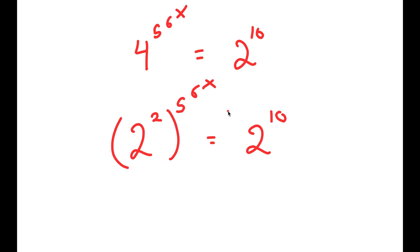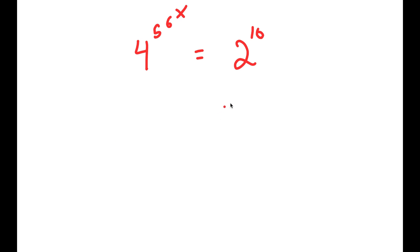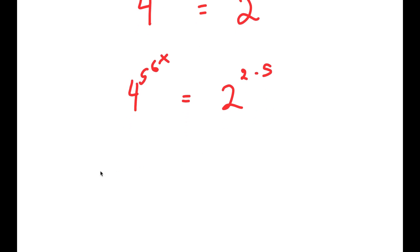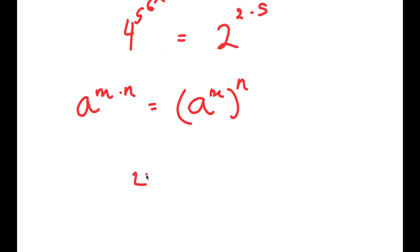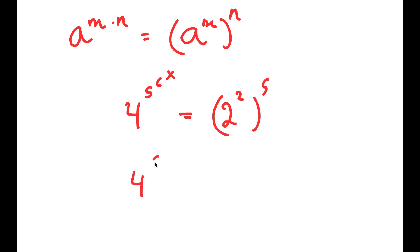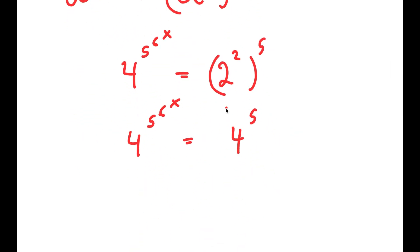However, what I can also do to make the bases the same is rewrite 2 to the power of 10 as 2 to the power of 2 times 5. Now if I have something of the form a to the power of m times n, this is equal to a to the power of m to the power of n. So this turns into 4 to the power of 5 to the power of 6 to the power of x is equal to 2 squared to the power of 5, meaning 4 to the power of 5 to the power of 6 to the power of x is equal to 4 to the power of 5. So either of the ways that I showed you works.